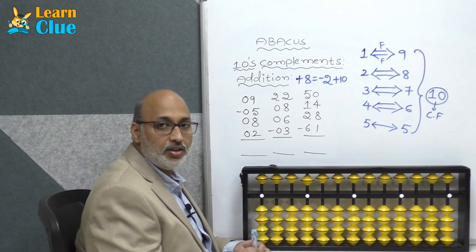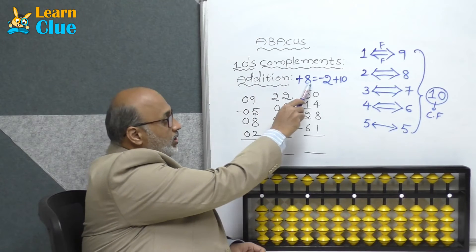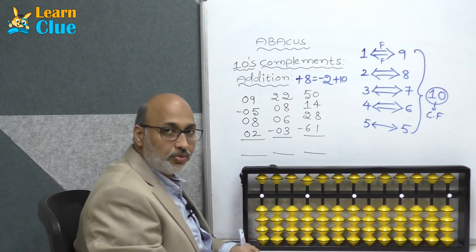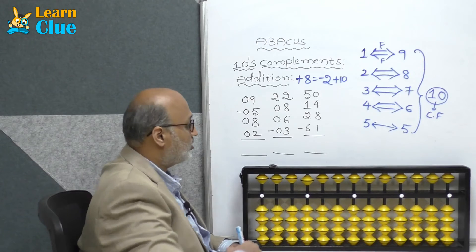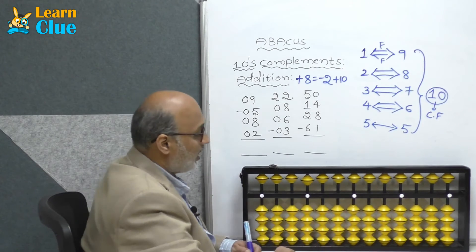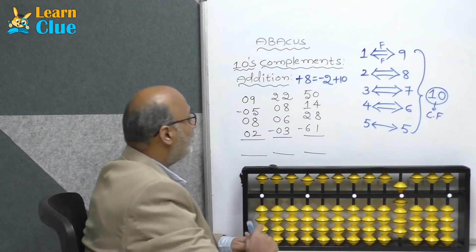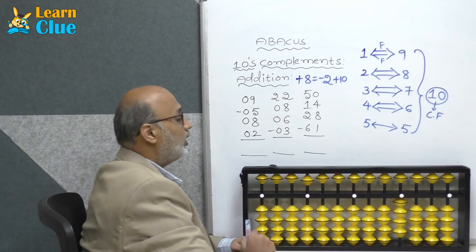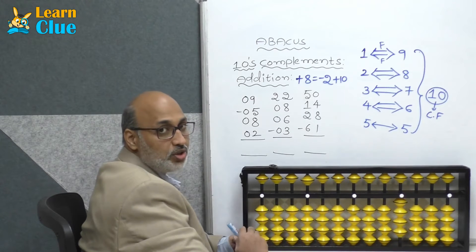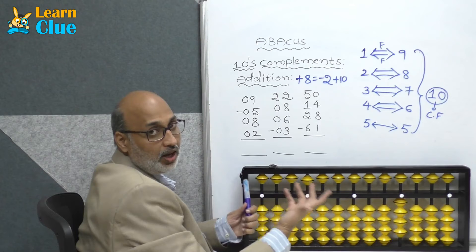Hi students, in this session we are going to learn about tens complements addition plus 8 technique. Let's see a couple of examples. Plus 9 first — minus 5, which is available. And minus 8: who is the friend of 8?